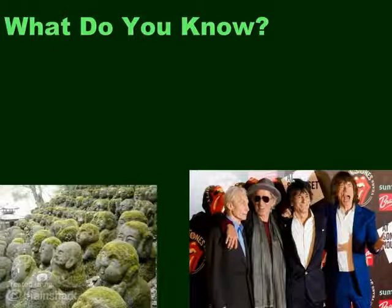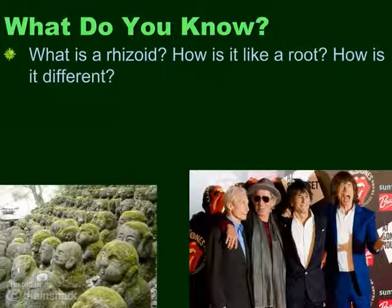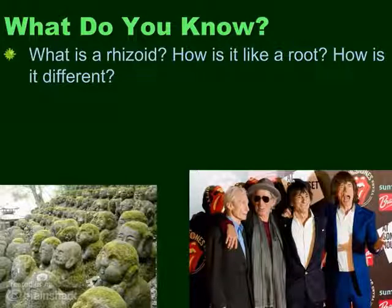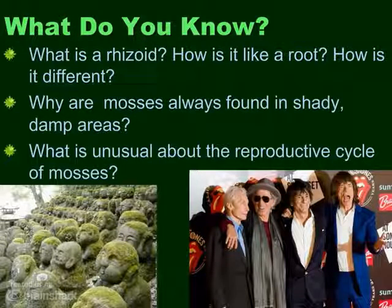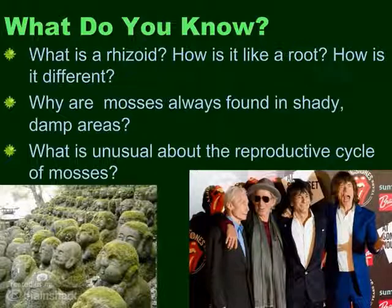So what do we need to take away from this presentation? What do we need to know about bryophytes? First, I need to know about rhizoids — how are they like a root, how are they different, what do rhizoids do, and where are they located? Why are mosses always found in shady, damp areas, and how come we never see them in dry areas? What's unusual about the reproductive cycle of mosses? And lastly, remember the old saying: a rolling stone gathers no moss — which ones have not, and which ones have gathered moss? See you in class!